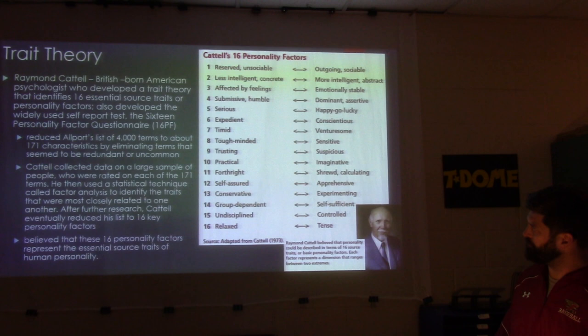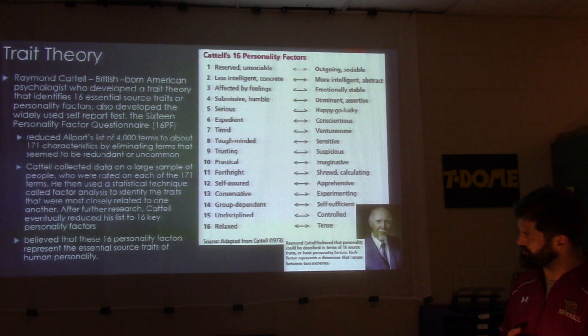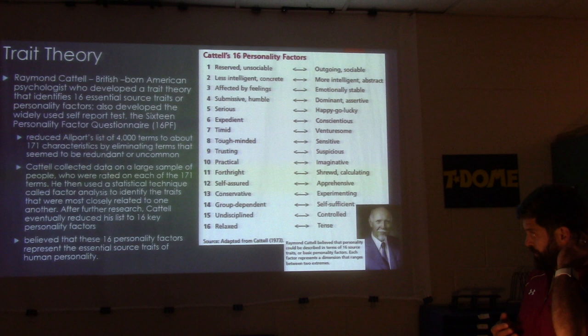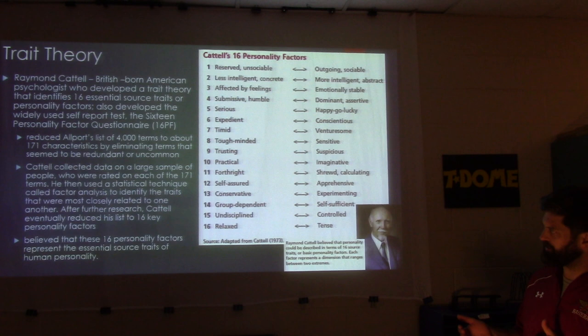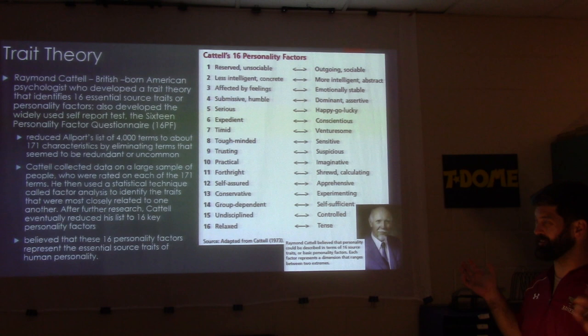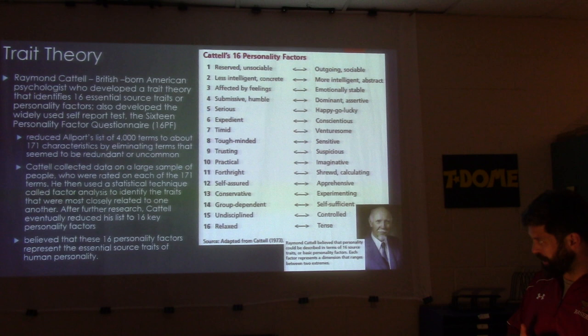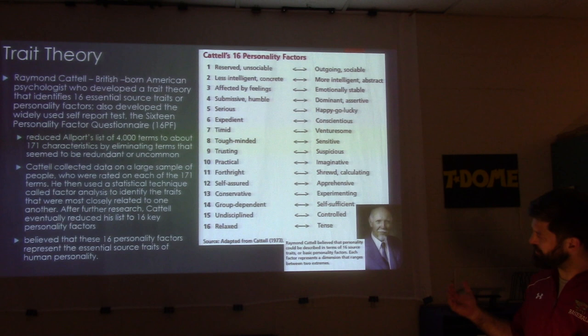Raymond Cattell, a British-born American psychologist, developed a trait theory that identifies 16 essential source traits or personality factors, and also developed the widely used self-report test called the 16 Personality Factor Questionnaire, sometimes written as 16PF. He reduced Allport's list of 4,000 terms to about 171 by eliminating redundant or uncommon terms, then used factor analysis to identify the most closely related traits, eventually reducing his list to 16 key personality factors representing the essential source traits of human personality.